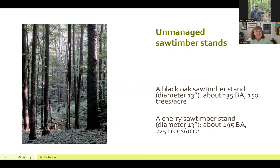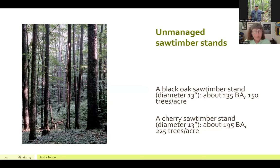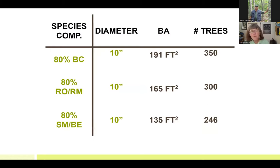As tree size changes into saw timber, these relationships to species still hold at a different level. The cherry-dominated stand has a higher maximum density — whether measured in basal area or trees per acre — than the black oak stand would have, even all the way up into a fully developed saw timber stand. Red oak and red maple often fall between white and black oak and black cherry in their maximum density in unmanaged stands.